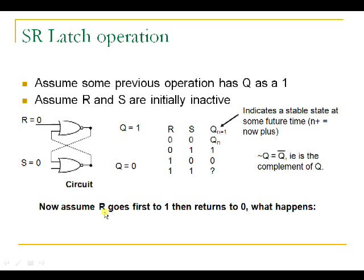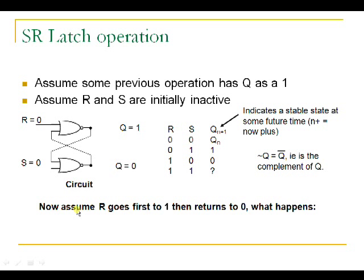Now assume that R input is applied with logic 1. The output of the NOR gate would be 0 if any one of the inputs is 1. The output of the NOR gate is 1 only when both inputs are 0. So when R goes active 1, the output from the first gate must be 0. As the input to the first NOR gate is 1, the output becomes 0.